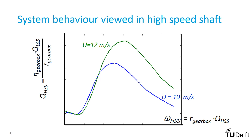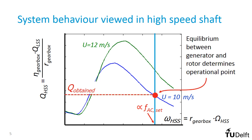Remember that the blue curve for 10 m/s wind speed was obtained by replacing the generator by a testing machine. Now that the generator is back, the generator takes the role of the testing machine. It sets the generator curve somewhere depending on the electrical frequency. The consequential torque in the high-speed shaft is where this curve crosses the blue curve. This is the point where the generator torque and rotor torque reach equilibrium in the high-speed shaft. If this generator was connected to the 50 Hz of the grid without a back-to-back converter, the operational point would always fall on this vertical line.